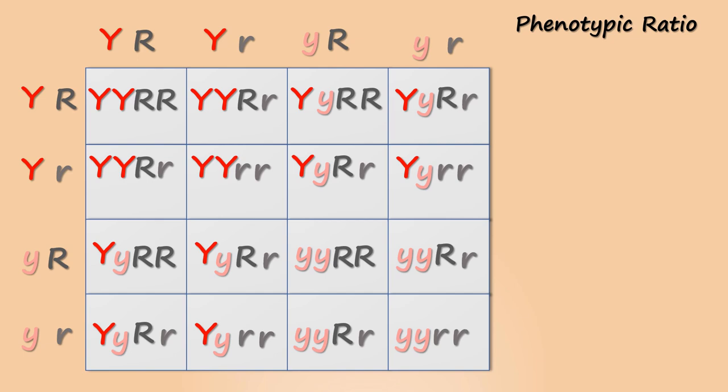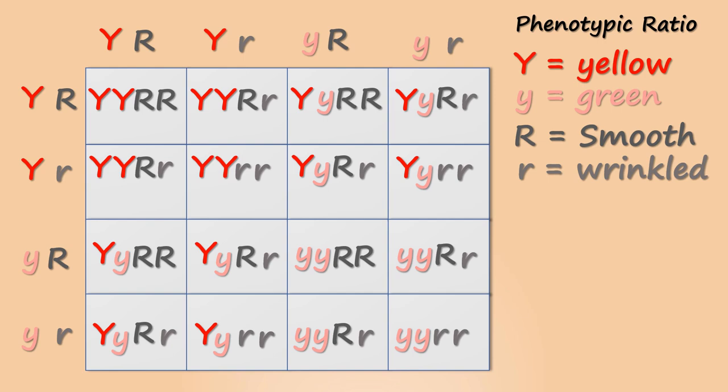Now, let's calculate the phenotypic ratio. We know the phenotype of the individuals as yellow, green, smooth and wrinkled. The gametes where there is at least one capital Y and one capital R will show the phenotype as yellow smooth seeds.